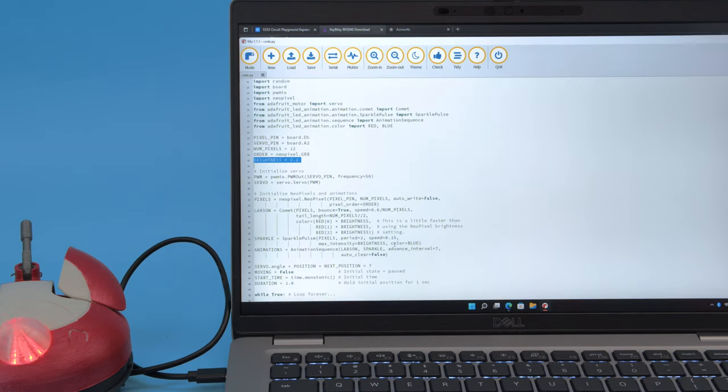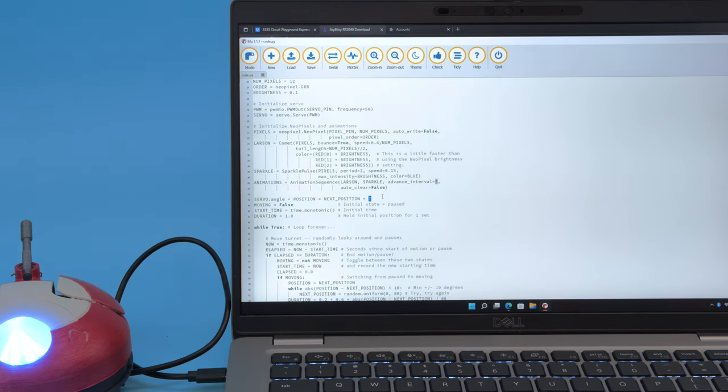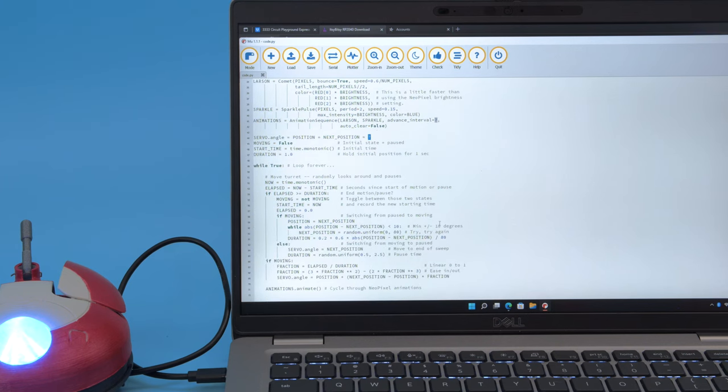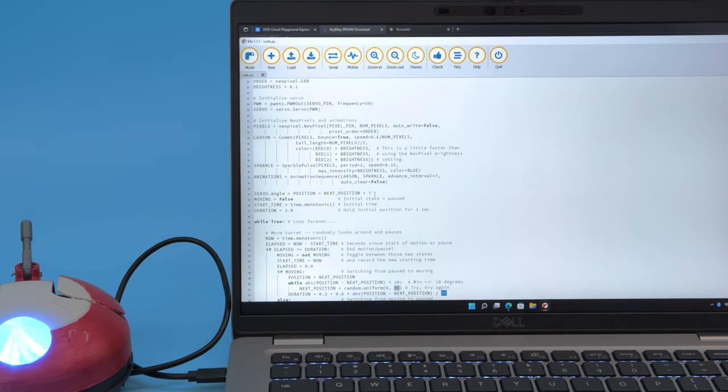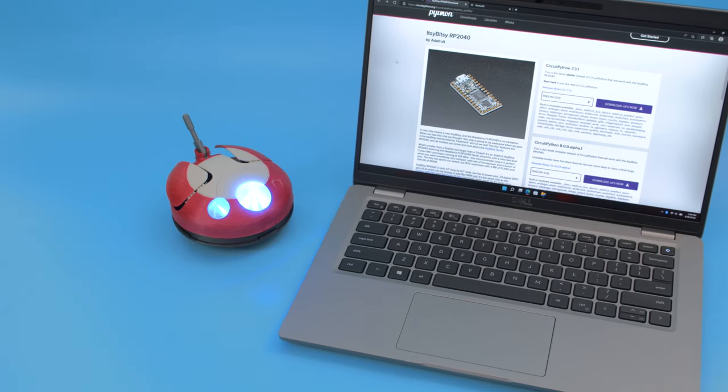The code for this project was written by Philip Burgess and can be customized to work with other builds. The servo-controlled wings feature randomized movements and the NeoPixel LEDs animate and change colors. We think this makes CircuitPython the best platform for cosplay props and droids alike.